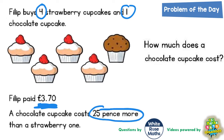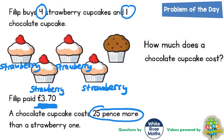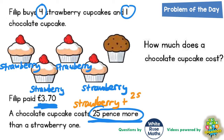The first thing I'm going to do is label all the cakes with what type of cake they are. There are the four strawberry cupcakes labelled, but I deliberately haven't labelled the chocolate cupcake, because I'm trying to avoid having two unknown prices. I'm only going to work out one unknown price first. I'm going to use the clue that it's 25 pence more for a chocolate cupcake — in other words, a chocolate cupcake is the same as a strawberry cupcake plus an extra 25 pence. So underneath the chocolate cupcake, that's what I'm going to write.